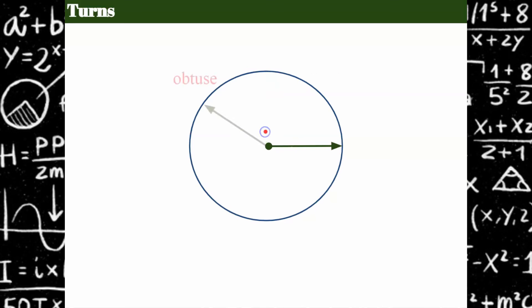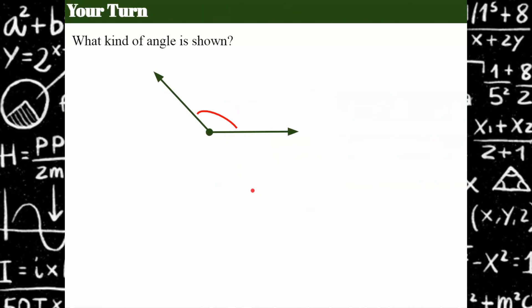We could have an obtuse angle greater than 90. We could have a straight angle as we keep turning, which is exactly 180 degrees, and then we could go and have a reflex angle, which is greater than 180 degrees. So that's how you can kind of think about it as you make turns going in a circular pattern.